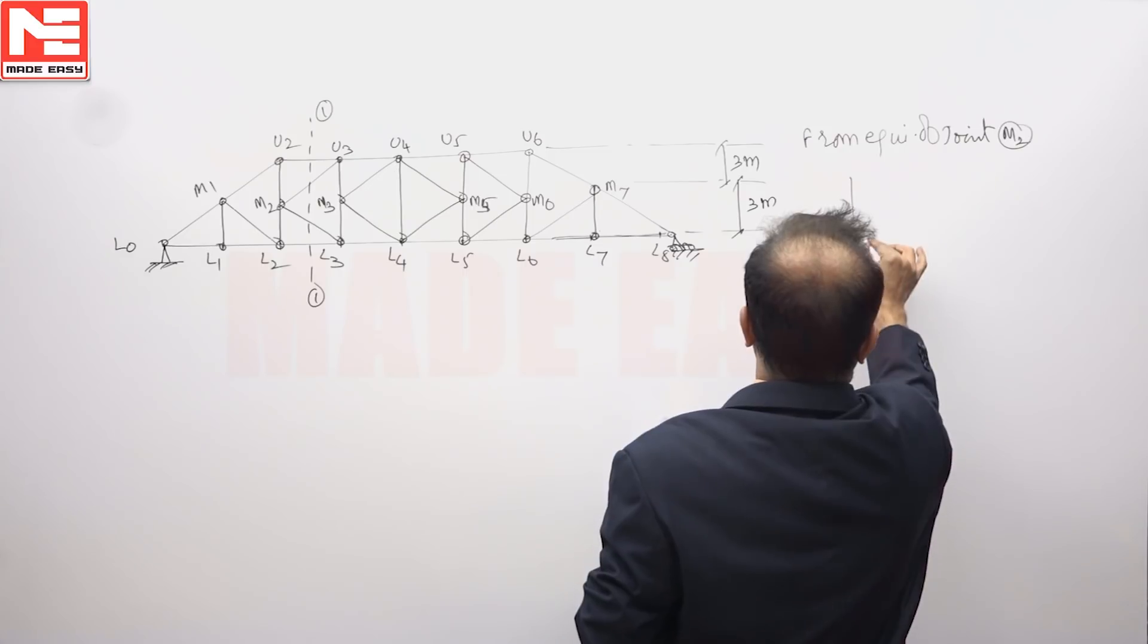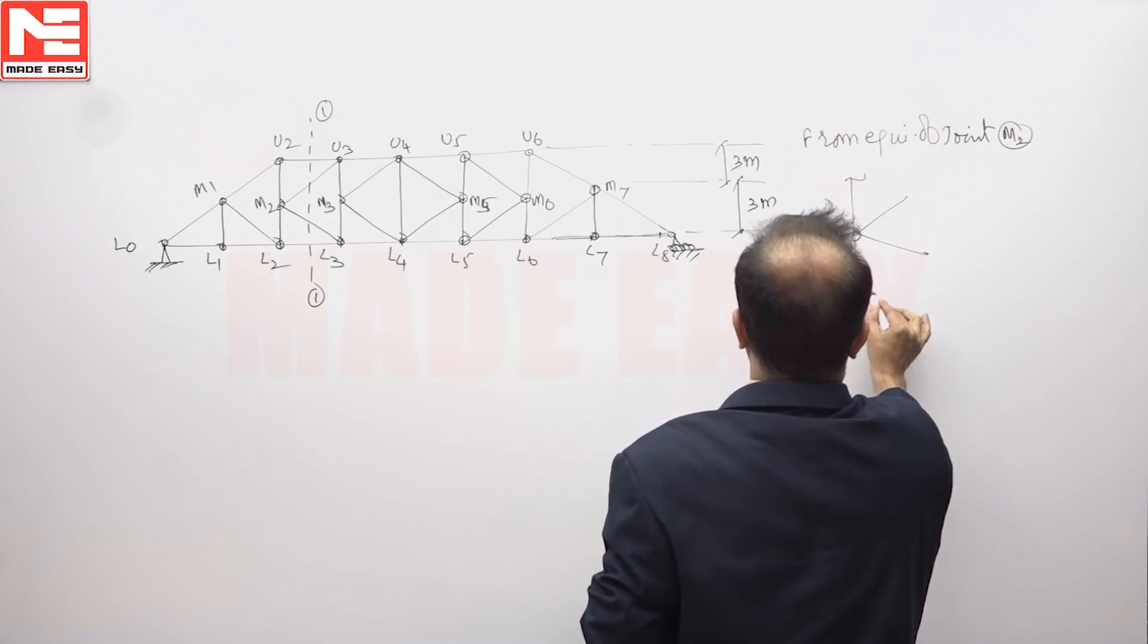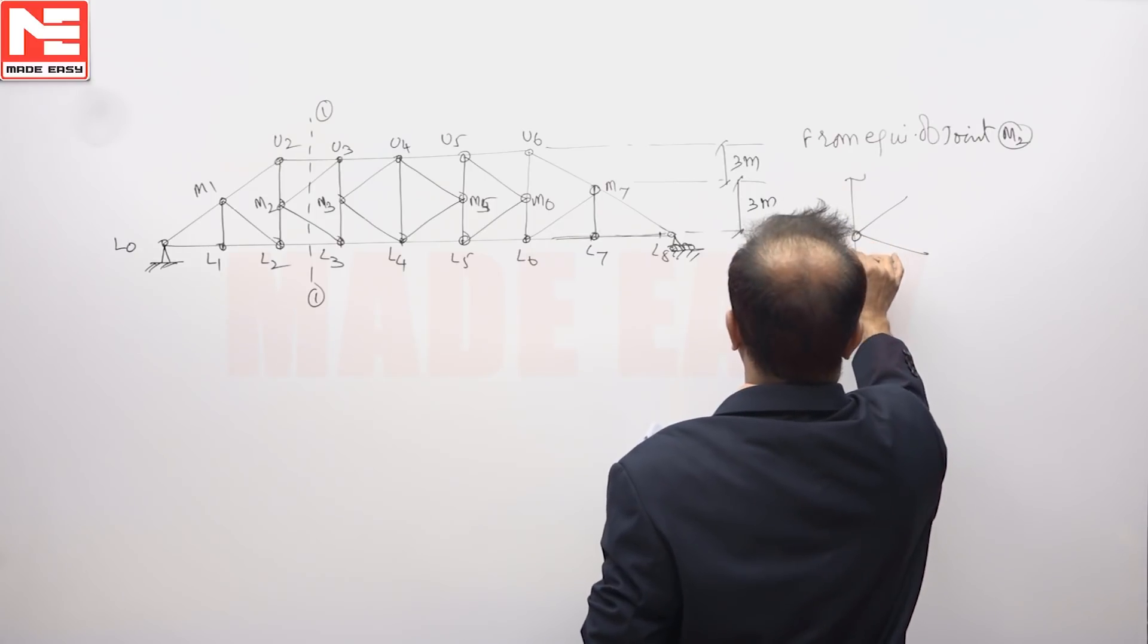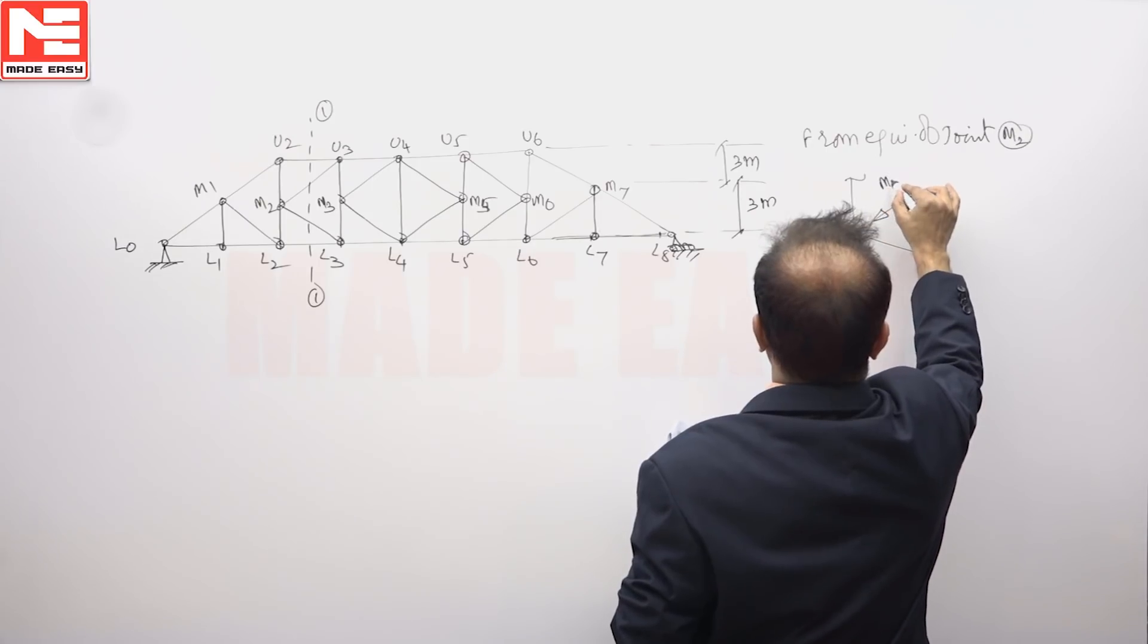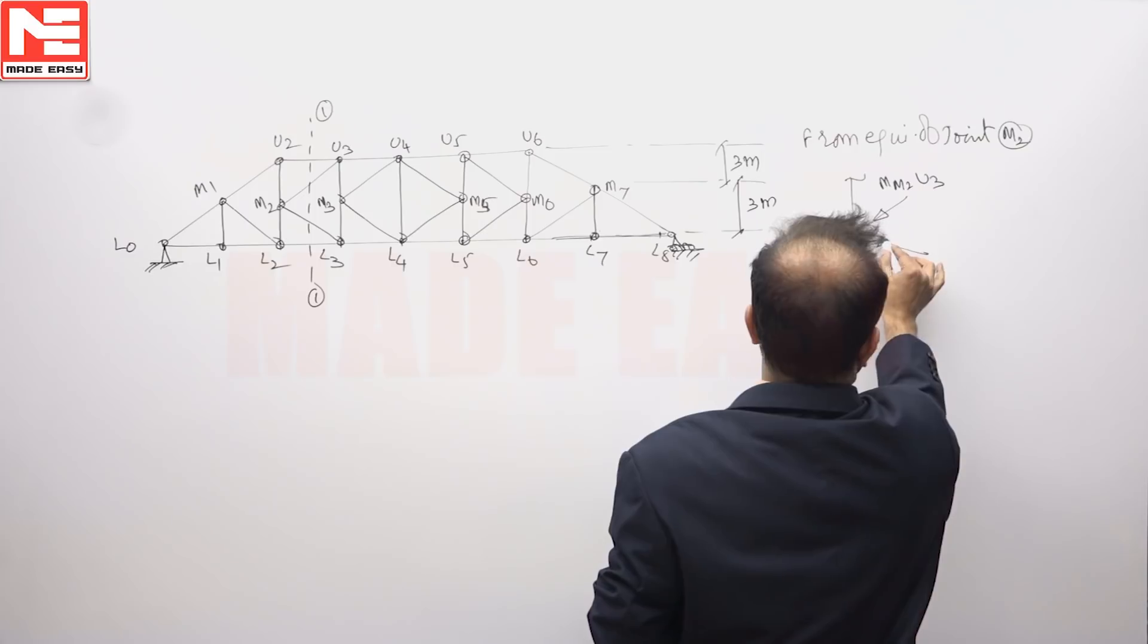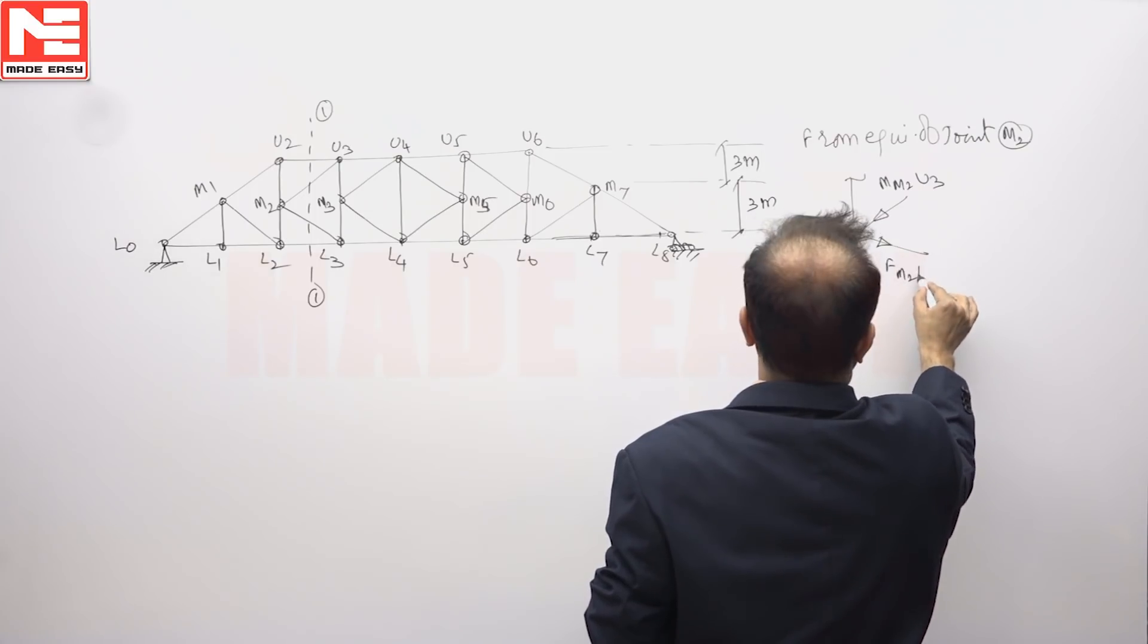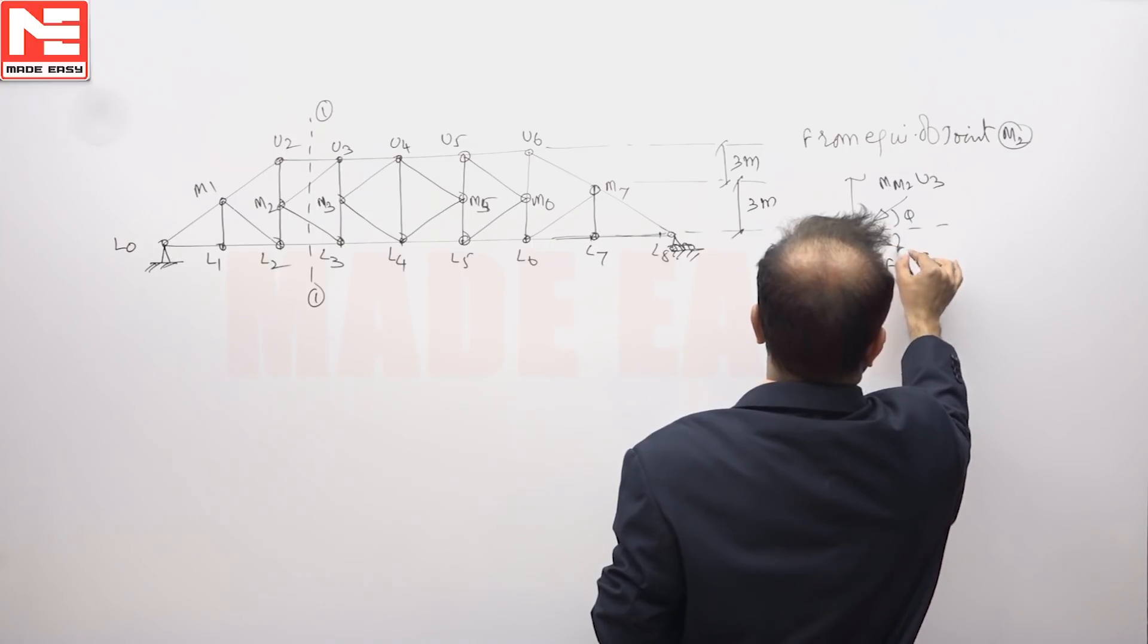That joint M2 looks like this. These are some forces M2. If you take one force, say FM2 U3, and this has to be opposite to that, FM2 L3. Theta, theta.